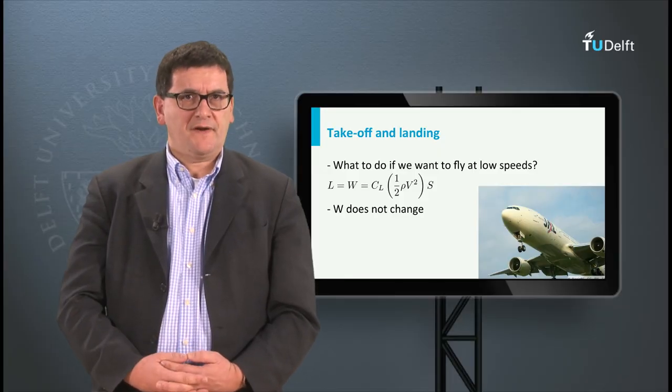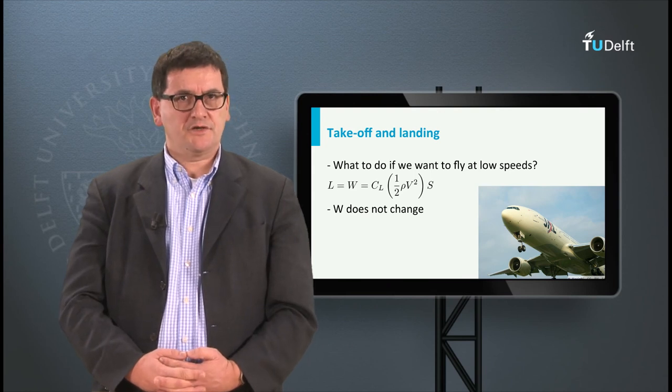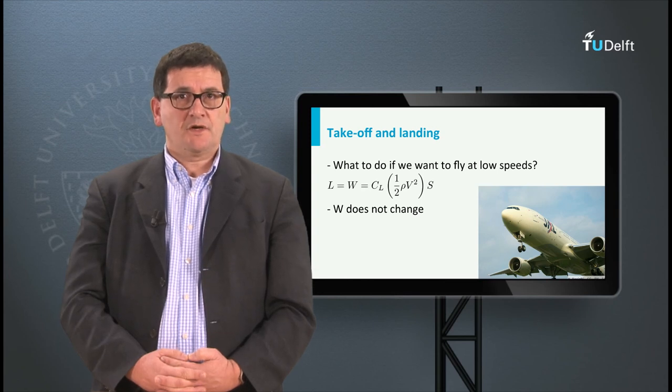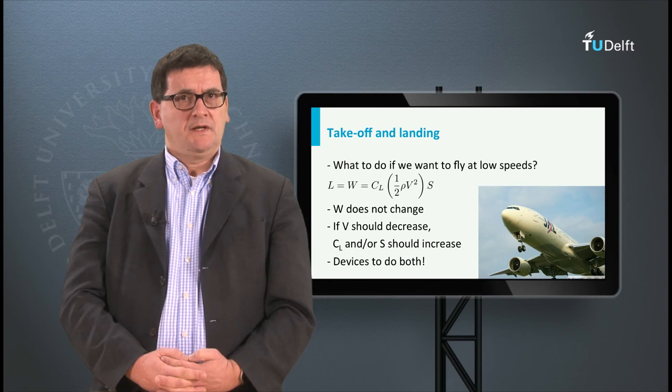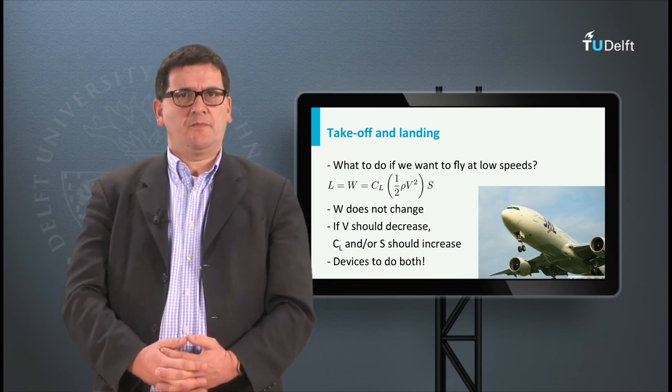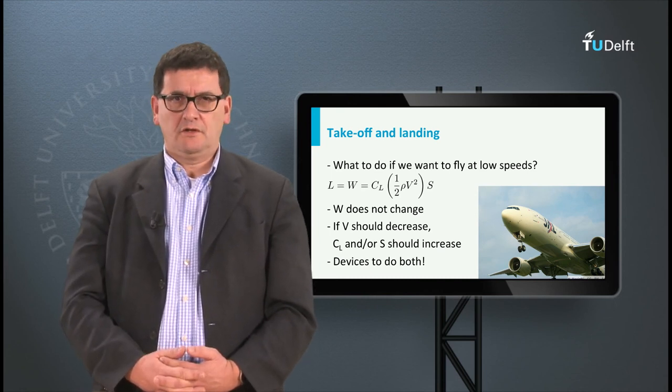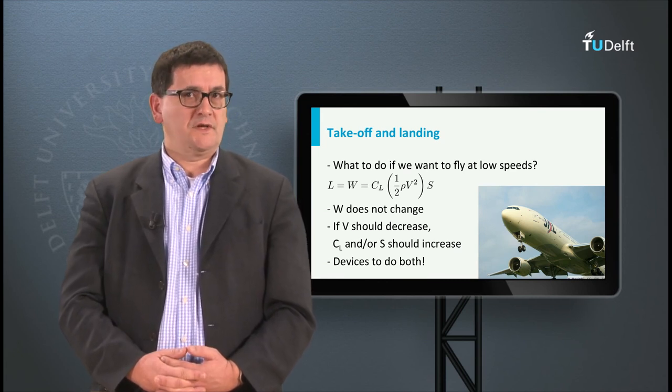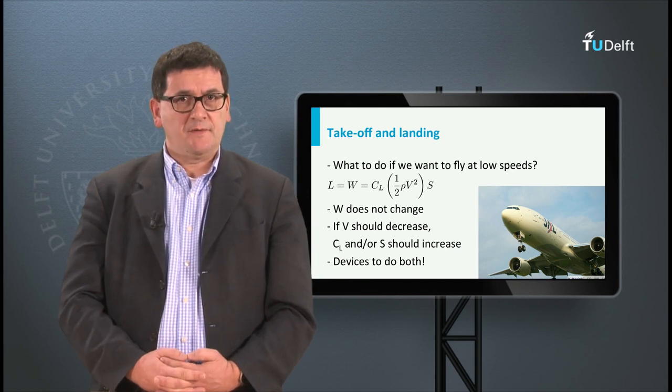At landing and take-off we fly at low airspeeds. As you can see in the formula this has a large impact on the lift force. Question is what to do, because the weight of the aircraft does not change. In order to compensate for a lower value of the airspeed, the other parameters should increase. The air density is beyond our control, although most airfields are at low altitudes and therefore the density has rather high values, which helps.